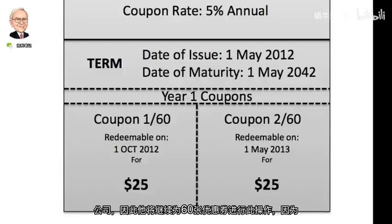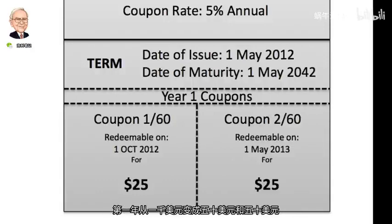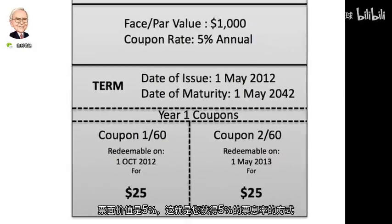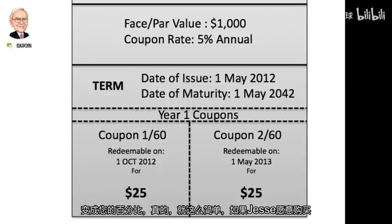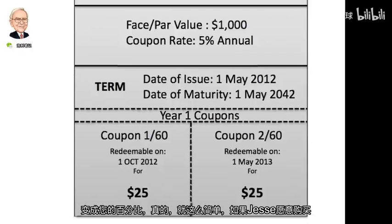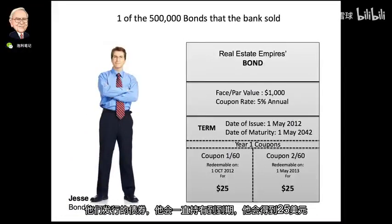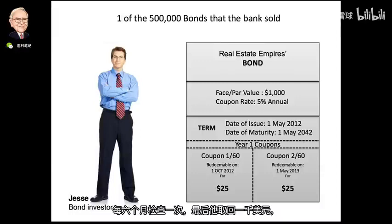Jesse would continue to do this for 60 coupons, because they're being paid two times a year. If we add up the two coupons for the first year, that's $50, and $50 from the thousand dollar par value is 5% — that's how you get the coupon rate of 5%. If Jesse bought this bond the day it was issued and held it until maturity, he'd get his $25 check every six months, and at the end he'd get his thousand dollars back.